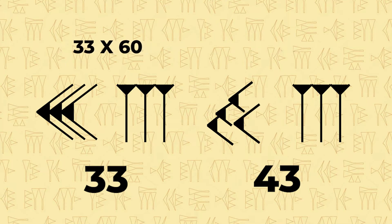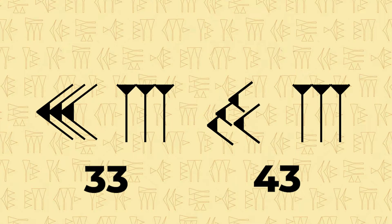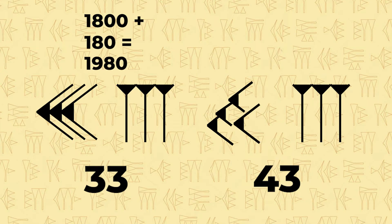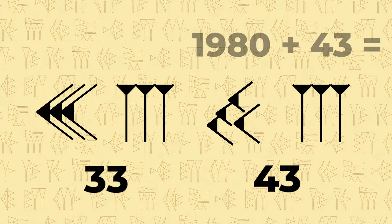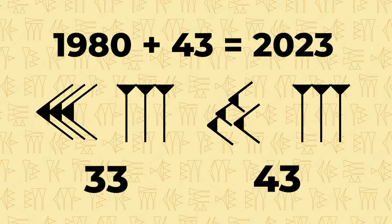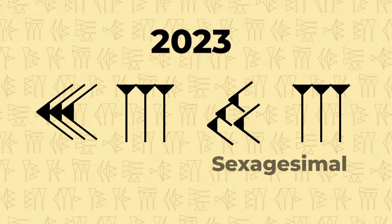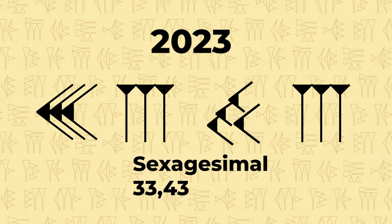Next is to multiply the sexagesimal number by 60. Instead of doing 33 by 60, we can more easily calculate 30 times 60 and then add 3 times 60. This gives us 1800, plus 180, or 1980 total. Add this number to the one on the right, 43, and we get 2023 — the year this video was made. We make it more simple by placing a comma.